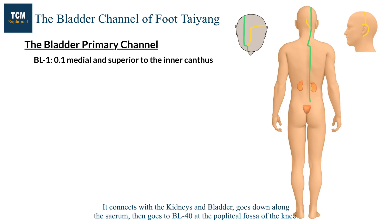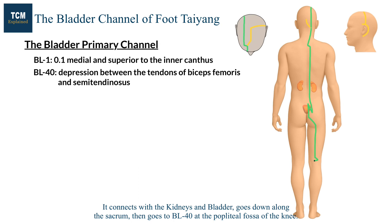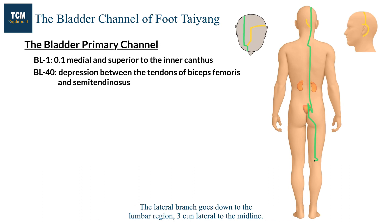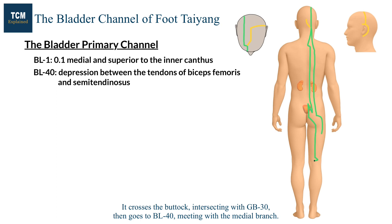It connects with the kidneys and bladder, goes down along the sacrum, then goes to bladder 40 at the popliteal fossa of the knee. The lateral branch goes down to the lumbar region, 3 cun lateral to the midline. It crosses the buttock, intersecting with gallbladder 30, then goes to bladder 40, meeting with the medial branch.